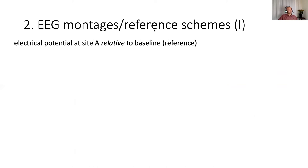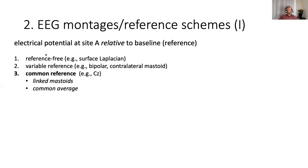All right, so on to EEG montages and references. Whenever we measure the electrical potential, like we do with EEG, we measure the potential at a site A relative to a baseline or a reference. There's many ways of doing that for EEG. I'm choosing to categorize it in this way. The first category is actually not quite a reference category, but I'm including them nonetheless. There's this category of so-called reference-free methods. The surface Laplacian is a good example, which is technically based on the second spatial derivative. It's a way of highlighting local activity underlying each electrode.